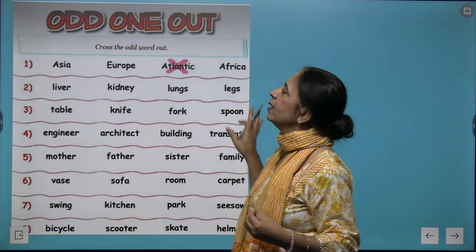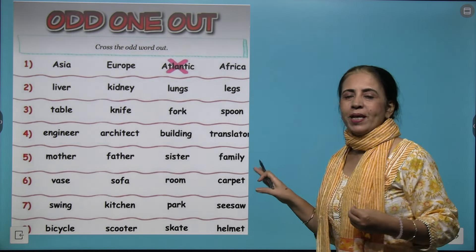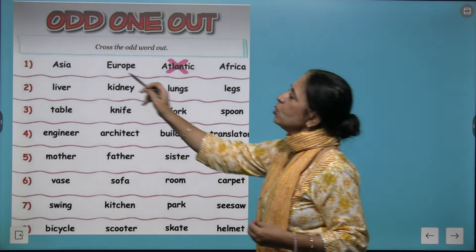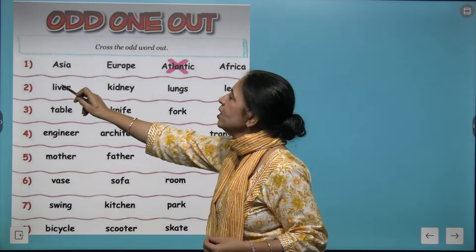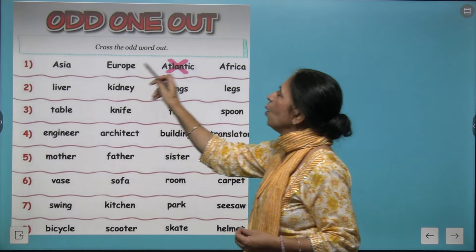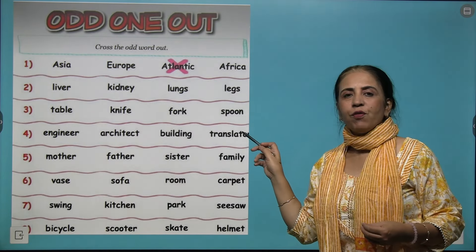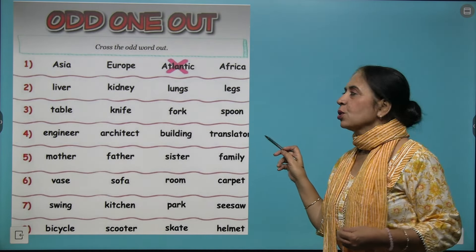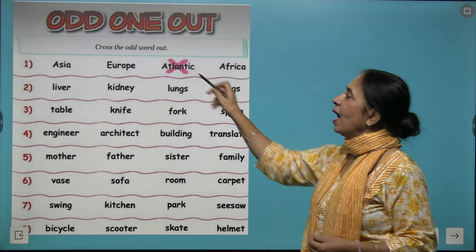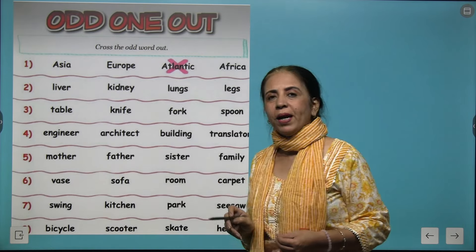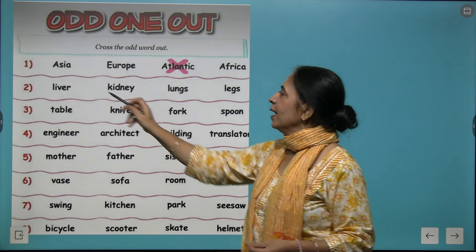Let's see some questions. We are going to check Asia, Europe, Atlantic, and Africa. Atlantic is the ocean, so we pick it out as the odd one.